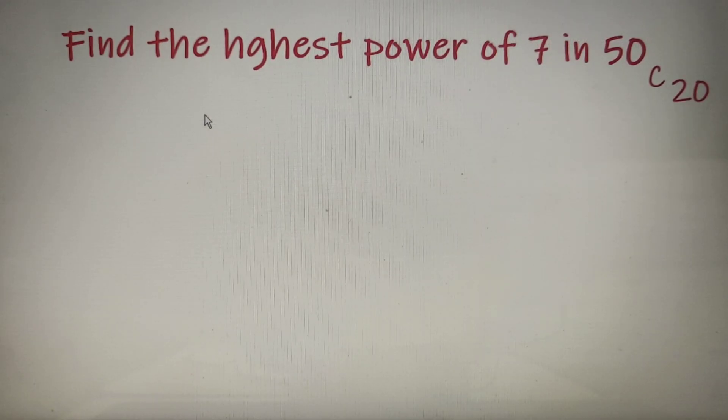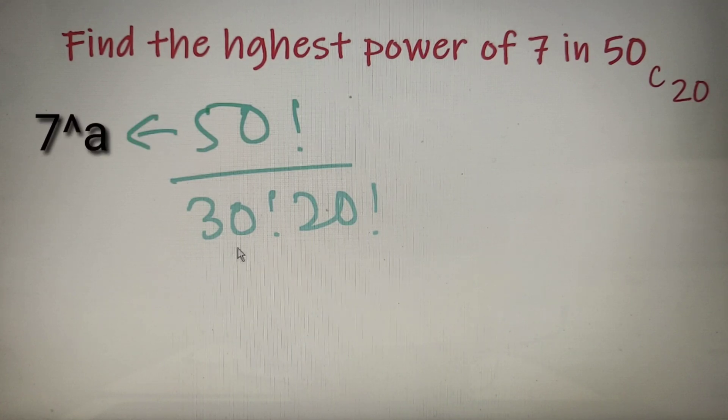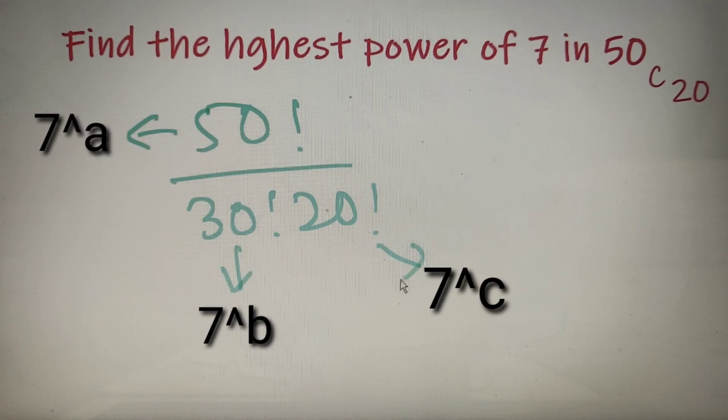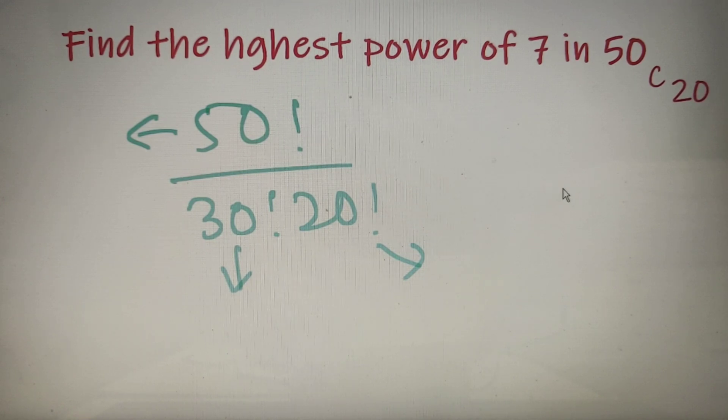Moving back to our question, we have to find out the highest power of 7 in 50 factorial divided by 30 factorial into 20 factorial. What we can do is calculate the highest power of 7 separately in these three factorials, and then we can apply the formula of indices and simply calculate the answer.